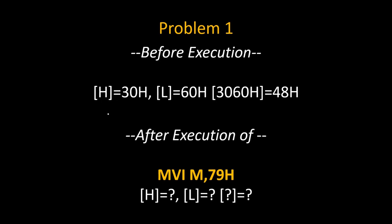In the second problem, H is 30H and L is 60H, so on memory address 3060H, data was 48H. After execution of MVI M, 79H, find what will be the new content of H, the new content of L, and whether the memory content will change. Solve these problems and give your answers in the comments.